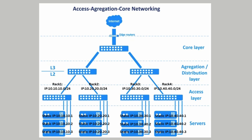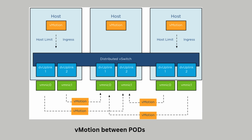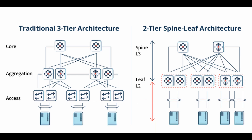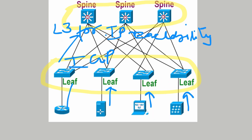Doosra option ye hai ki hum VLANs ko across the access layer span karein - usse humare mobility ki problem toh resolve ho jayegi, but usse broadcast domain aur failure domain ka size bhi increase ho jayega. Agar hum baat karein data center network ki, toh humare paas static IP addresses hote hain, hum DHCP ki through address assign nahi karte. Data center mein har rack ko different subnets allocated hote hain, aur agar hum ek VM ko migrate karna hai from one rack to another, hume uska IP address bhi change karna hoga - jo ki ek managed ya hosted customer ke liye acceptable solution nahi hai. Toh data centers ke is challenge ko resolve karne ke liye we use the spine and leaf architecture along with VXLAN.